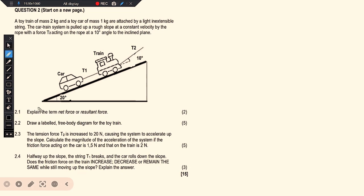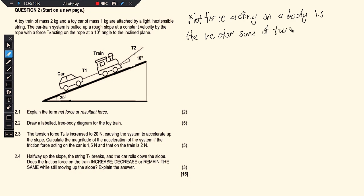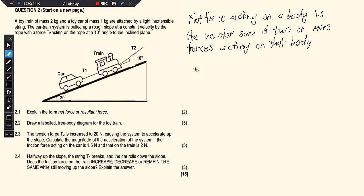Question 2.1 simply says explain the term net force or resultant force, so you can explain either one. Net force acting on a body is the vector sum of two or more forces acting on that body.